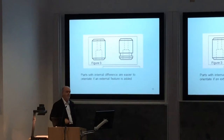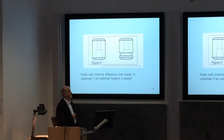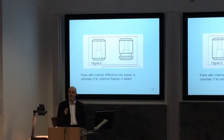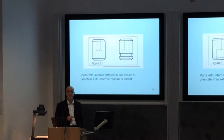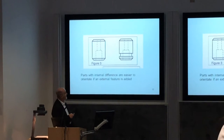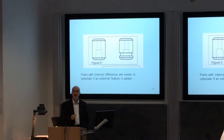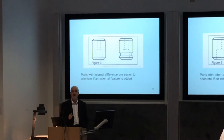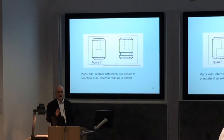Here's another one with a similar point. We've got a component with a hole at the top which is different from the bottom. It's easy for a human being to look at that and say the hole at the top is smaller than the one at the bottom — but how does a robot detect that? How does it know which end has the small hole and which has the big hole? By adding an external feature at the end for the large hole, the robot can detect that very quickly. The gripper can be designed to grip it at that point, so you immediately get the component in the right position and orientation in the assembly, and your assembly time starts to reduce.